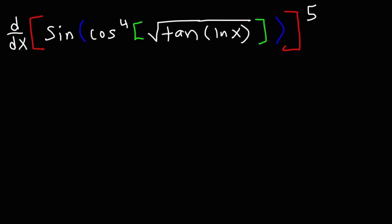If you were given a problem like this on a test, what would you do to find the derivative of it? How would you find the derivative of the fifth power of sine of cosine raised to the fourth power of the square root of tangent of the natural log of x? Because we have functions within or inside of other functions, we need to use the chain rule to find the derivative of this expression.